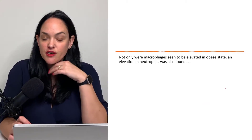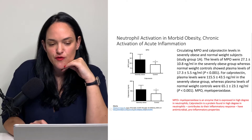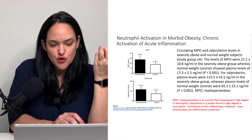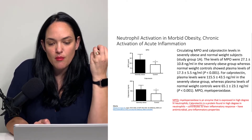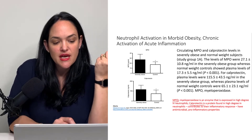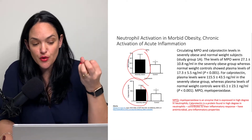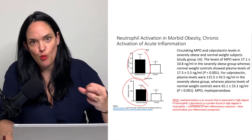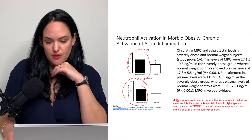Not only were macrophages seen to be elevated in the obese state, but we also see higher amounts of neutrophils, another key immune cell. This shows levels of MPO and calprotectin, both of which are expressed more highly in neutrophils, and we see their expression is higher in individuals with more severe obesity compared to controls, again showing that there's more immune activity in individuals with obesity.